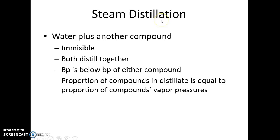In steam distillation, what we do is we distill water plus another compound. The other compound must be immiscible in water, and what you find is both the water and the other compound drip over together. The boiling point is below the boiling point of either compound, so it will be below 100 degrees if the other compound has a high boiling point.